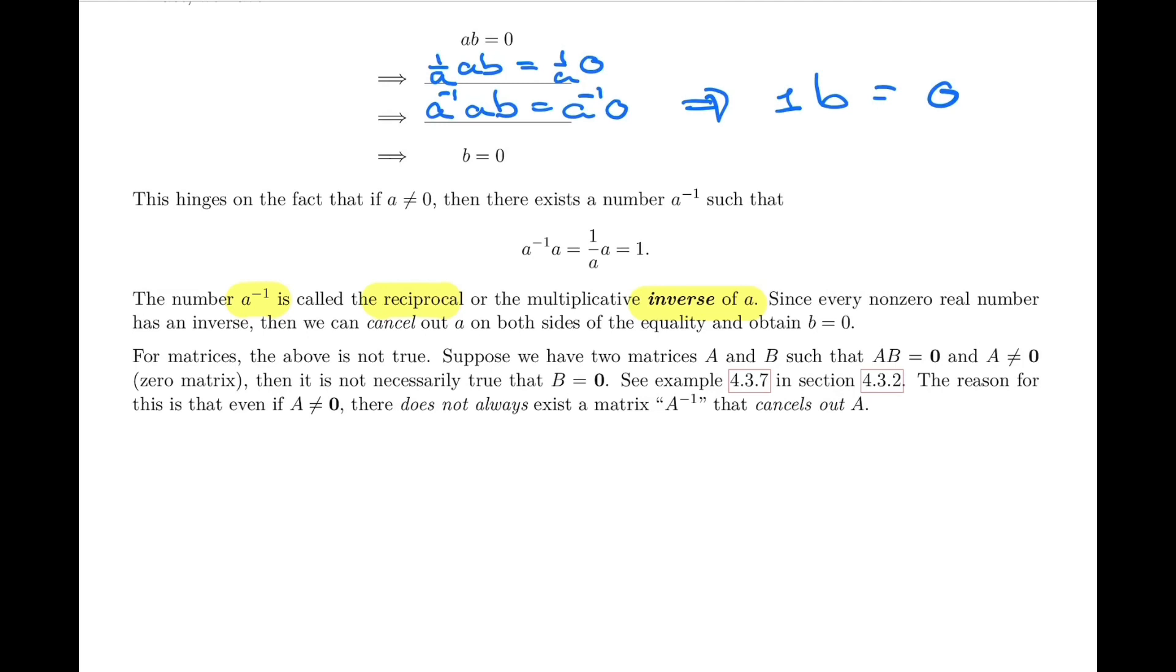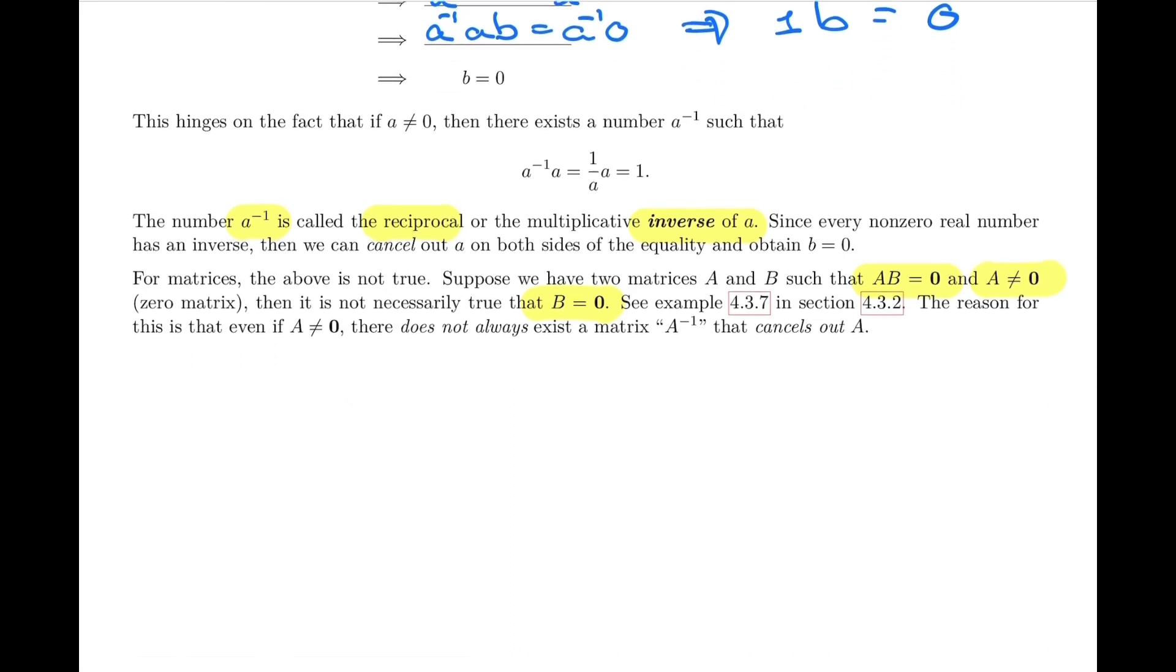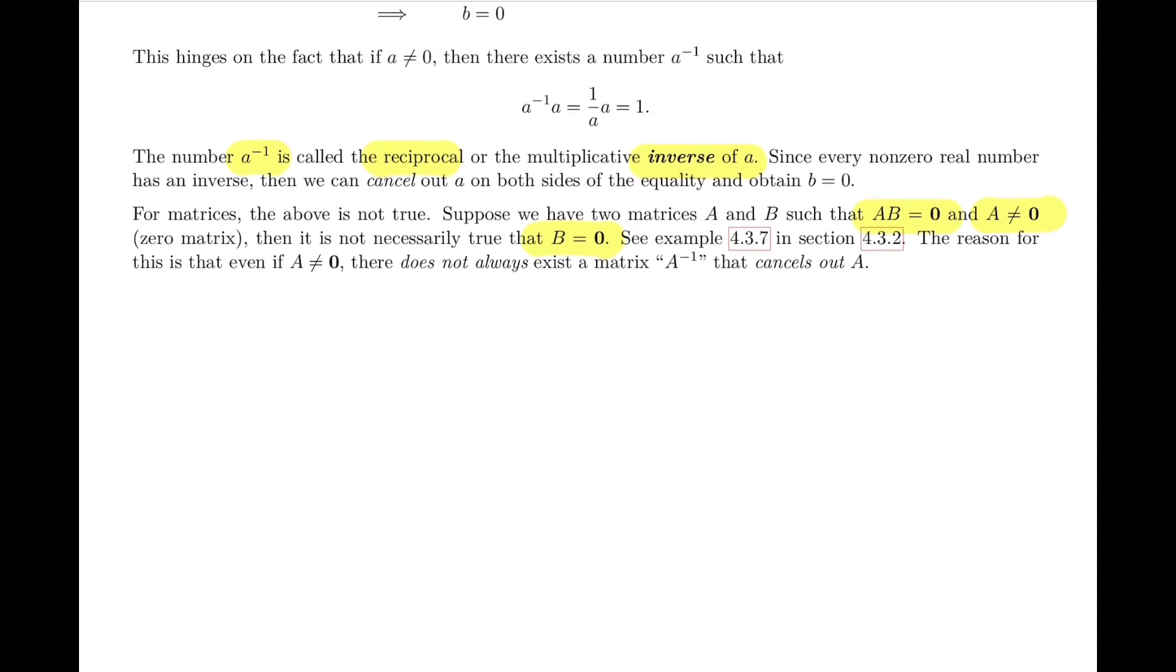Now, for matrices, this is not necessarily true. For matrices, we could have, in fact, that AB equals zero. We can have that one of the two factors is not zero. And yet, that doesn't mean that the other factor has to be zero. So we saw an example of this in section 4.3.2, but let's just quickly see another one.